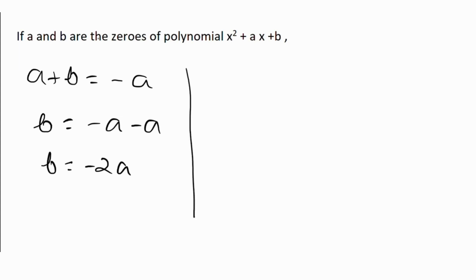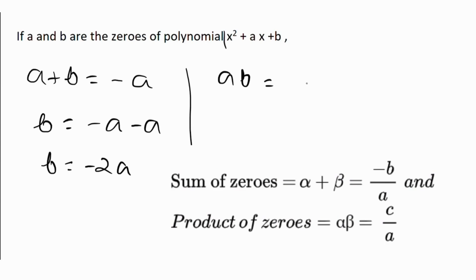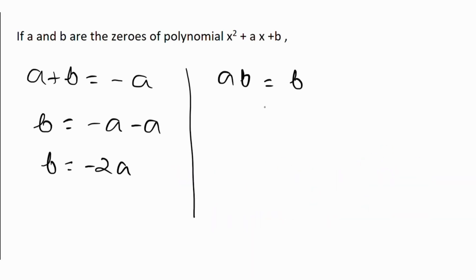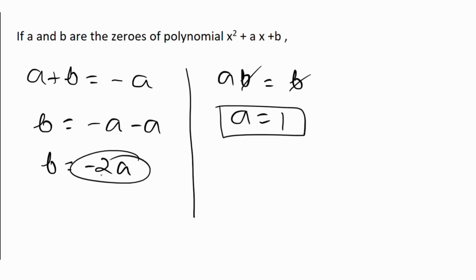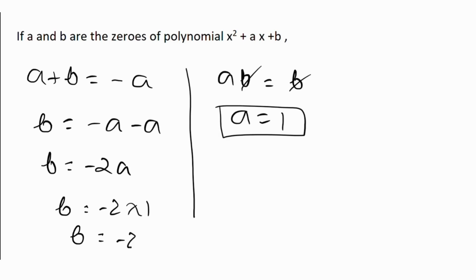Similarly, the product of the zeros, a times b, equals the constant term divided by the coefficient of x², which is b over 1. So b equals ab, and cancelling b gives a equals 1. Replacing a in b equals minus 2a, we get b equals minus 2 times 1, which is minus 2. So a equals 1 and b equals minus 2.